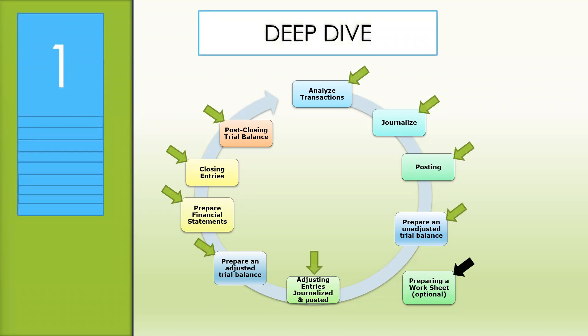Now, let's take a deeper dive into the 10-step accounting cycle. In step one, transactions are analyzed. Moving on to step two, transactions are recorded in the journal. This is where we journalize.